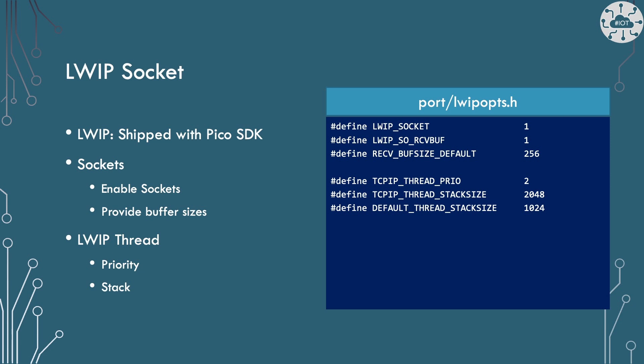Sockets are provided by the LWIP library, which ships with the Pico SDK — the code is all in the Pico SDK lib folder if you want to review it. By default, sockets are not enabled, so we need to provide a port configuration definition file to turn these on and change a few defaults. The sockets need some buffer space to work. The socket library uses threads from FreeRTOS, so socket threads need a higher priority — giving it a priority of two here. We also provide a stack size for the TCP/IP thread; the default 1K was too small, so I've made it larger.